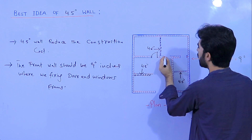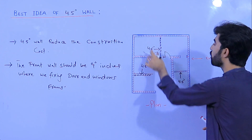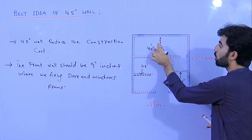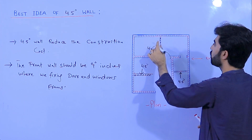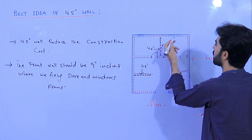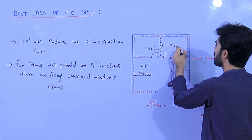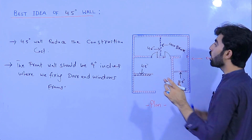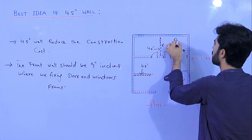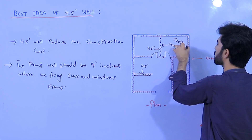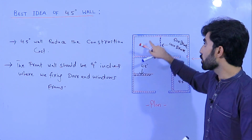In a partition wall, if you want to reduce the cost of construction, you can use 4.5 inch wall. For example, if we require 1000 bricks for a 9 inch wall, then for a 4.5 inch wall we only require 500 bricks, because 4.5 inch wall thickness is half of a full brick.